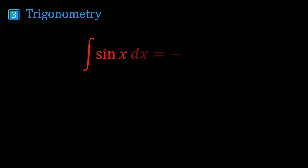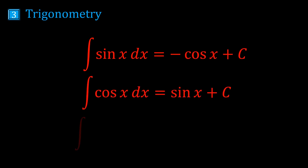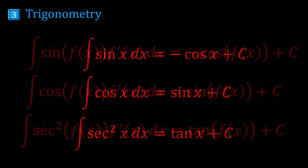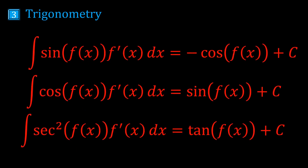Now for trigonometry. The integral of sin is minus cos; the integral of cos is sin; and the integral of sec² is tan. This comes directly from the trig derivatives. There are more to cover — like the integral of cosec² and the integrals of cosec and sec — but you can look those up yourself. The general forms just use reverse chain rule, so as long as you know the integrals of sin, cos, and sec², you should be able to handle those examples.